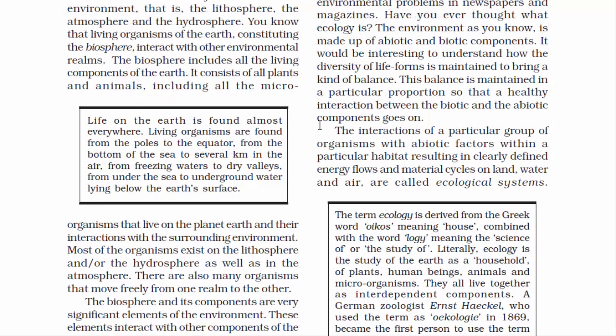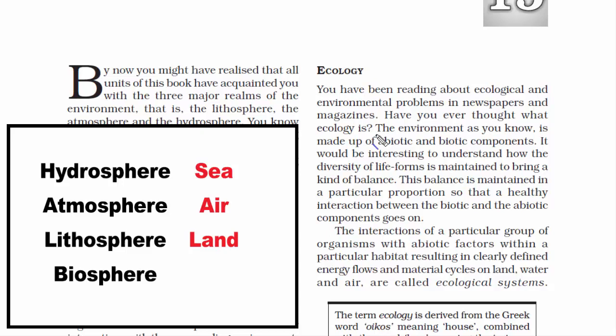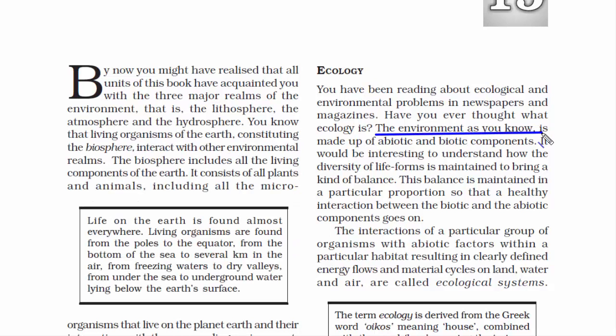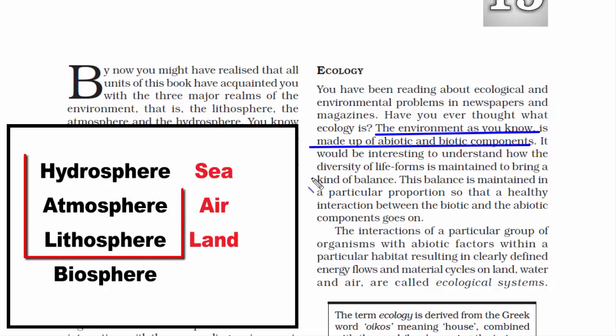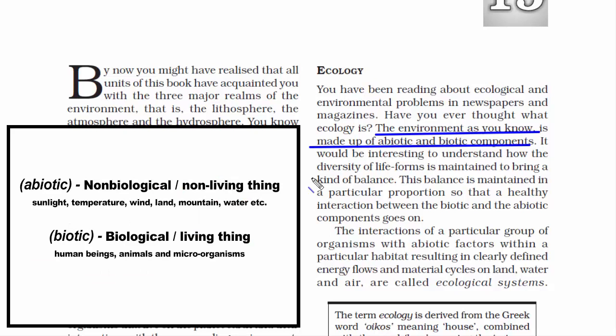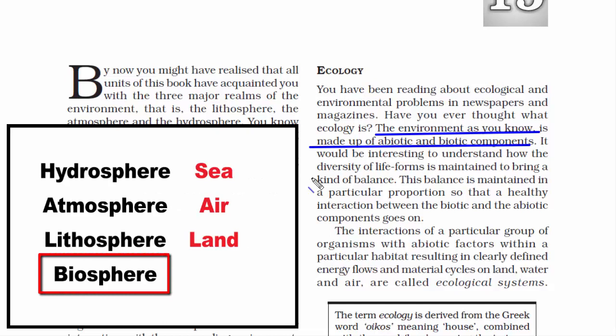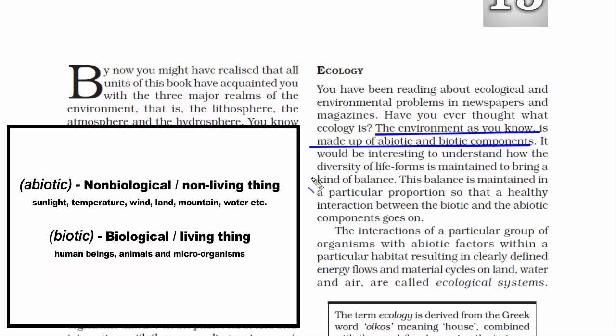The four domains — Lithosphere, Hydrosphere, Atmosphere and Biosphere — are classified into abiotic and biotic components. Abiotic refers to the non-biological, non-living component of the environment, such as sunlight, temperature, wind, land, mountain, water, etc. Excluding biosphere, the other three domains fall under the abiotic component. Biotic refers to the biological or living component of the environment, such as plants, human beings, animals and microorganisms — that is, the biosphere. Please remember this difference.